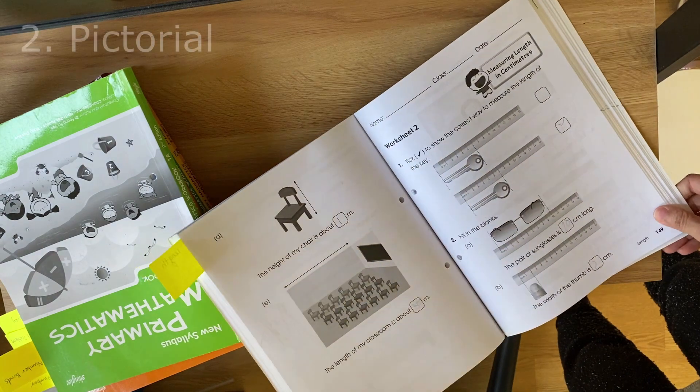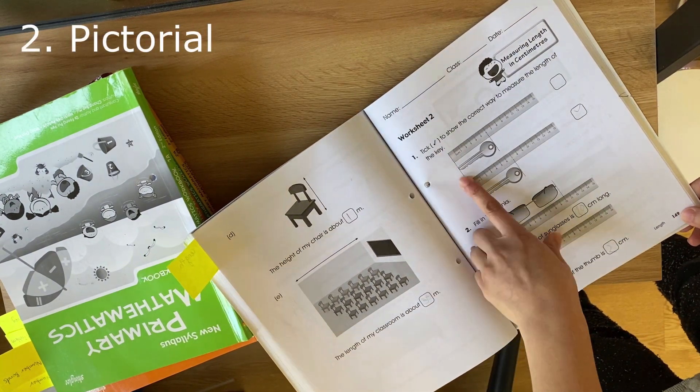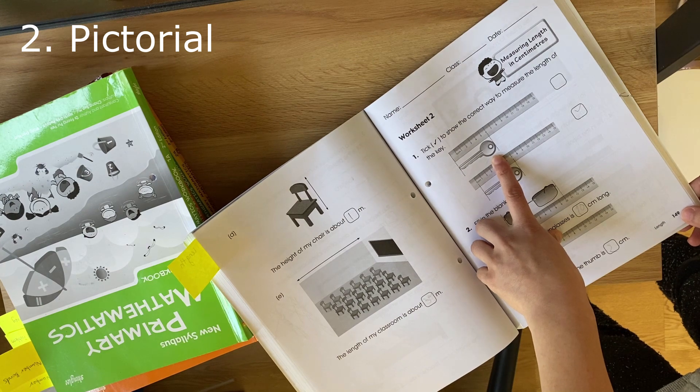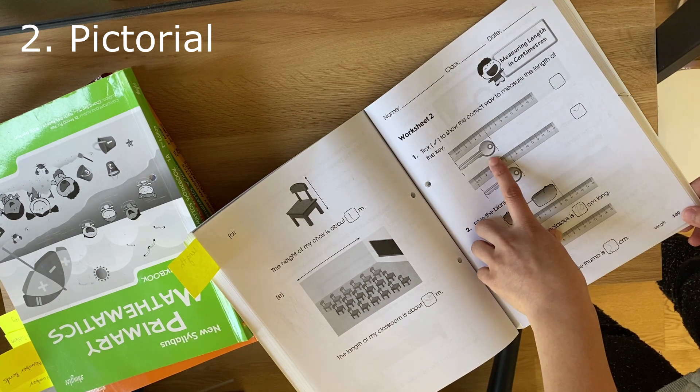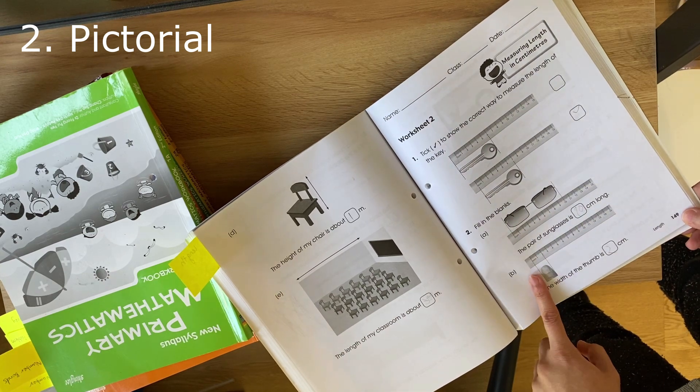When it comes to the pictorial stage, they'll be replacing physical objects with a pictorial representation. So instead of measuring a key, you're going to measure a picture of a key or a picture of sunglasses or a picture of a finger.